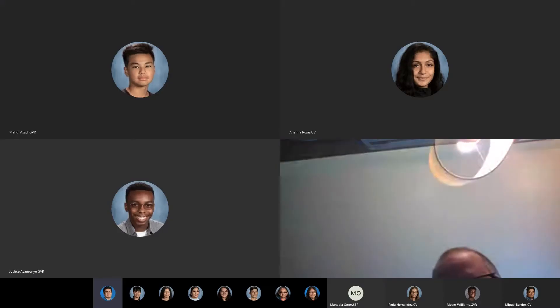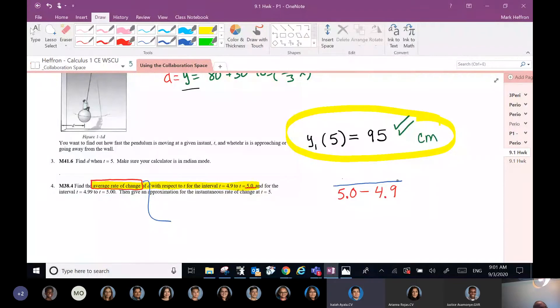D, it'd be D(5) minus D(4.9). I love it.